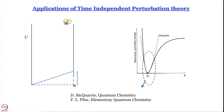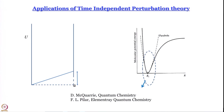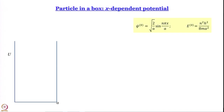We are going to see an application today: a particle in a box with a slanting bottom. In the next module we will discuss the anharmonic oscillator, where we will see what kinds of problems arise if we do not define the perturbation properly, or if we try to stop at too low a level of correction.